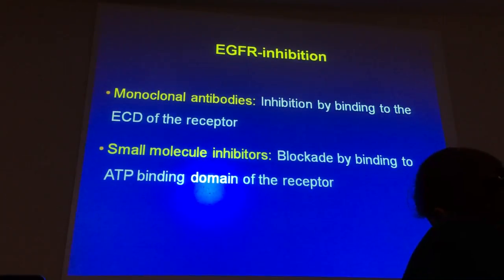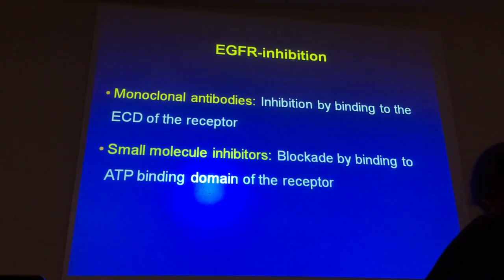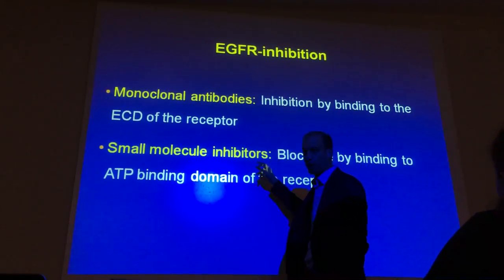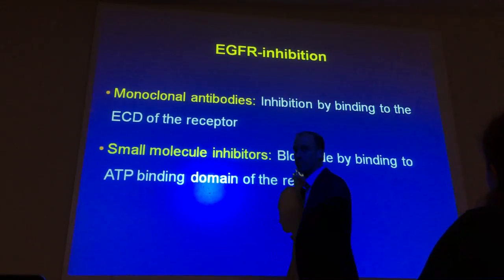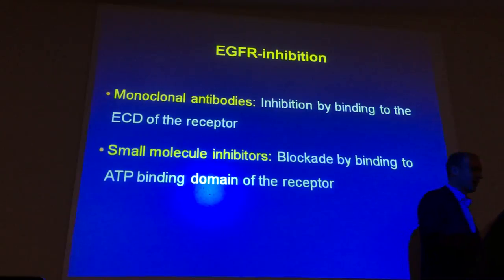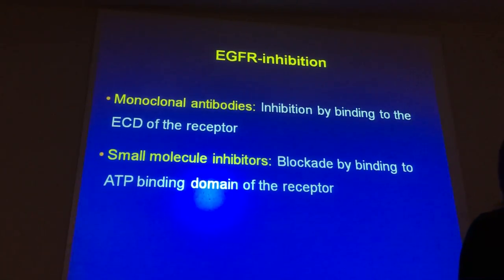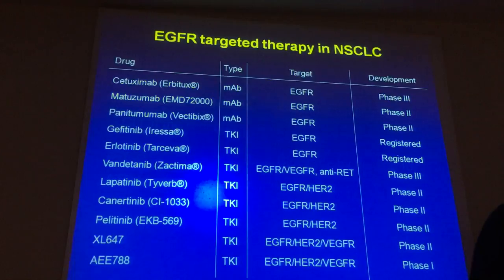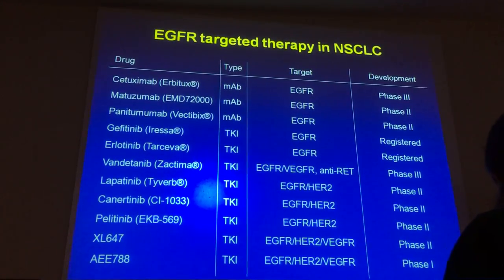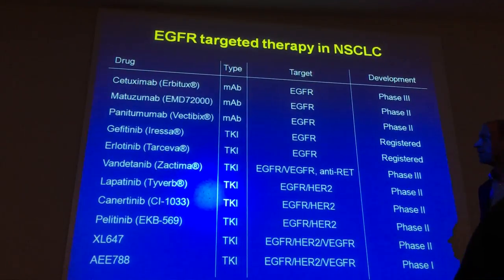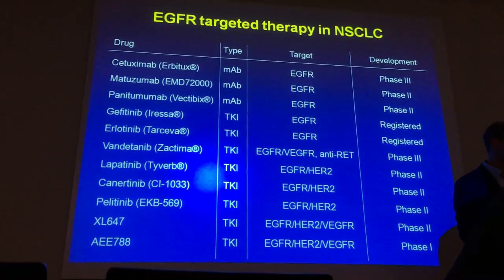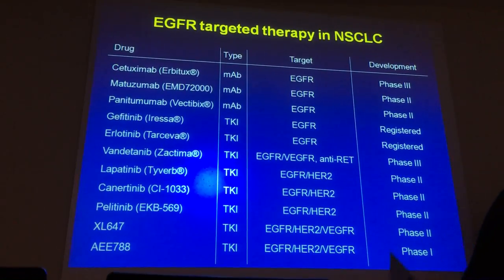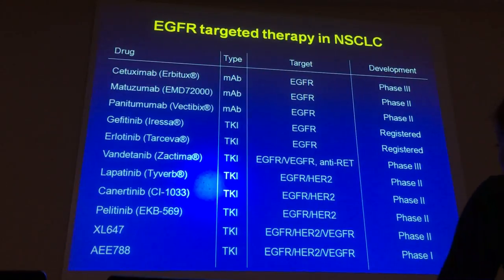Monoclonal antibodies inhibit by binding to the extracellular domain, but we can also block the EGF receptor with small molecule tyrosine kinase inhibitors, which bind to the ATP-binding domain on the cytoplasmic domain of the EGF receptor. Many different drugs have been developed by different companies to target the EGF receptor family — in clinical use, cetuximab and panitumumab, among others.